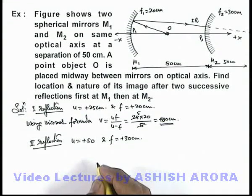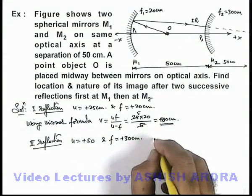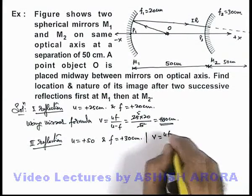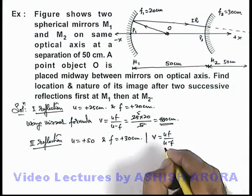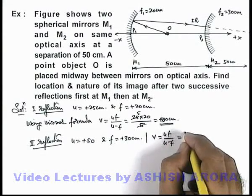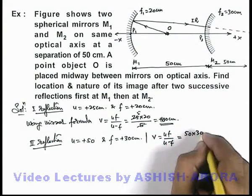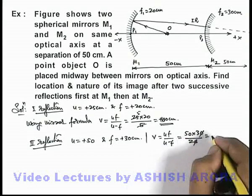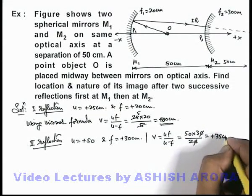Now if we use the mirror formula, then image position can be given as again uf by u minus f. On simplifying, we'll get it is 50 multiplied by 30 divided by 20, that'll be 150 by 2 is plus 75 centimeters.